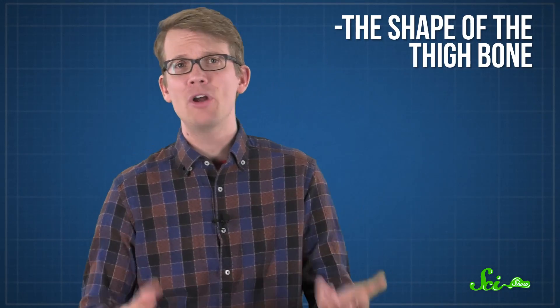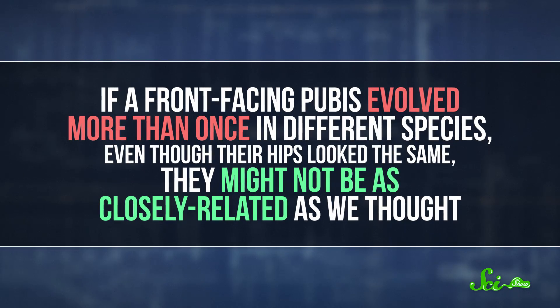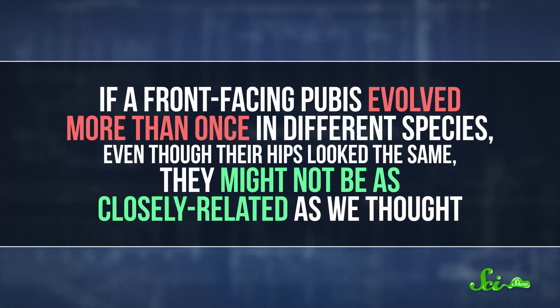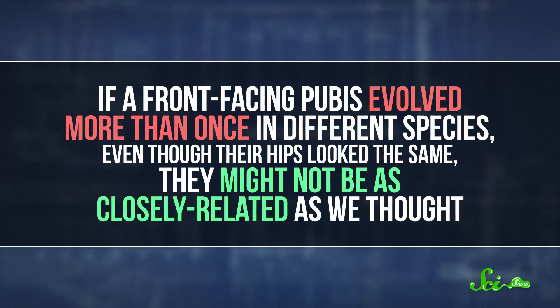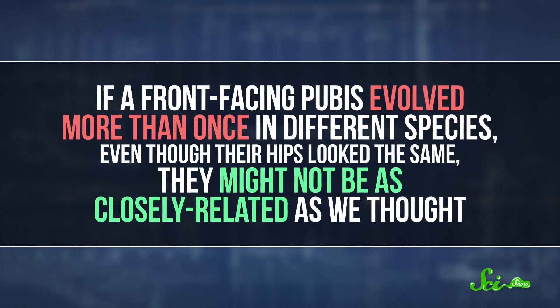shares 21 criteria, like the shape of the thigh bone, ridges on the upper jaw, and a fusion of certain ankle bones. So maybe the hip-based system division is deceptively simple after all. It might be tricked by convergent evolution. Basically, if a front-facing pubis evolved more than once in different species, even though their hips looked the same, they might not be as closely related as we thought.